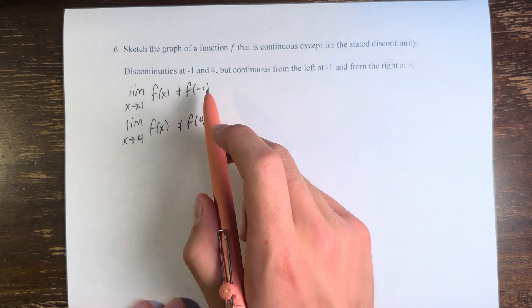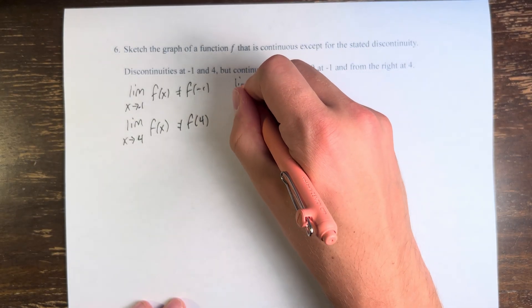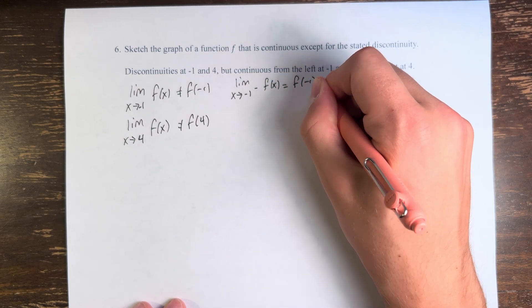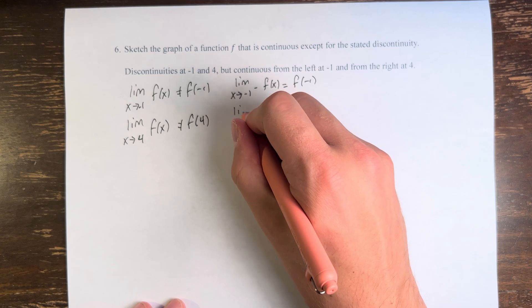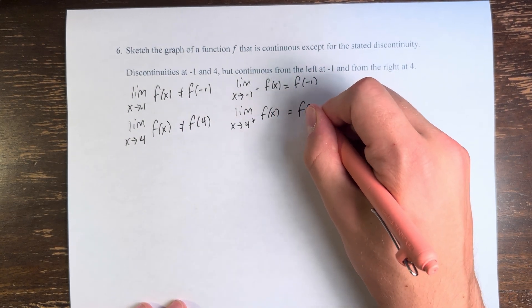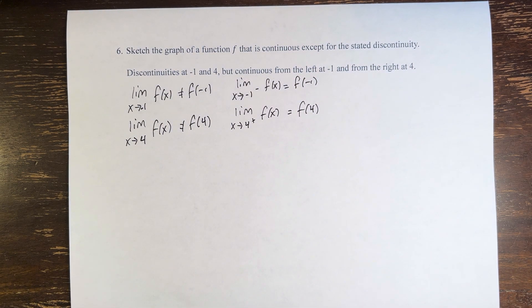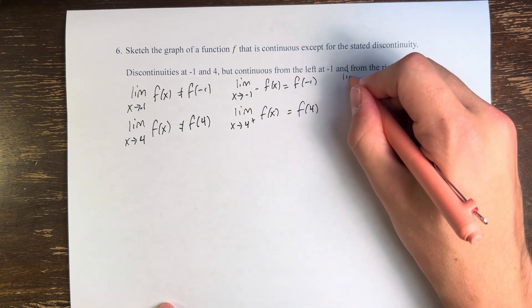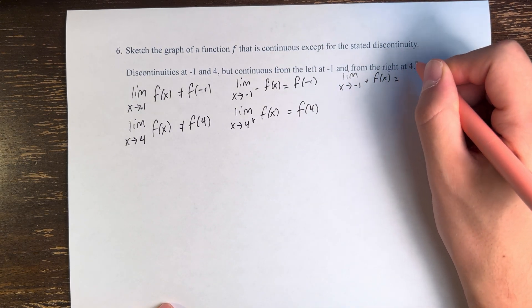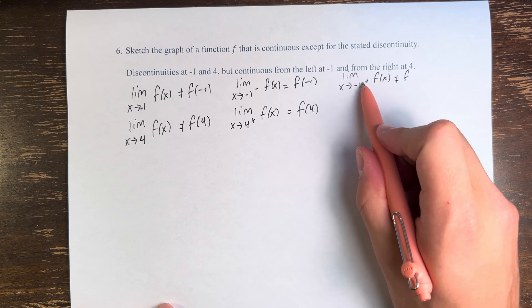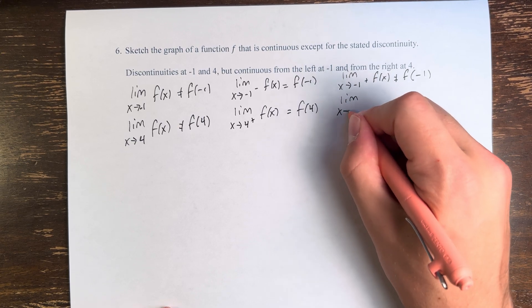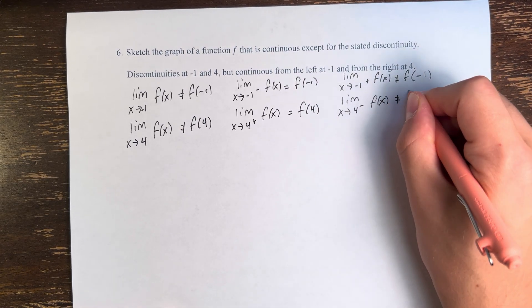However, we are told that it is continuous from the left at negative 1. This means that as we approach negative 1 from the left of f of x, this equals f of negative 1, and from the right at 4, which means that as we approach 4 from the right, it's equal to f of 4. This implies that the function is not continuous from the right at negative 1, so the limit as x approaches negative 1 from the right is not equal to f of negative 1, and as x approaches 4 from the left, this does not equal f of 4.